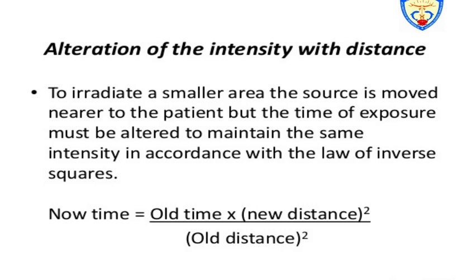There is also a formula for alteration of intensity with distance. To irradiate a smaller area, the source is moved nearer to the patient, but the exposure time must be altered to maintain the same intensity according to the inverse square law. The new time is calculated as: old time × (new distance)² ÷ (old distance)².